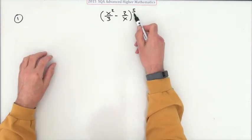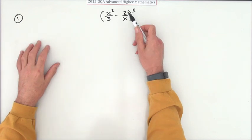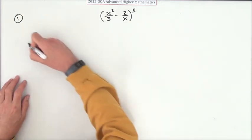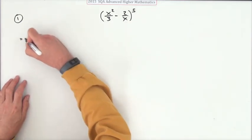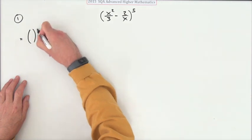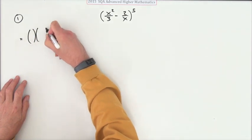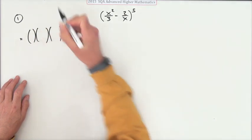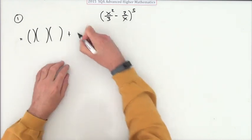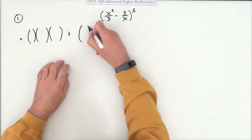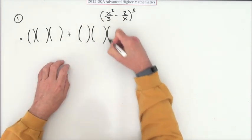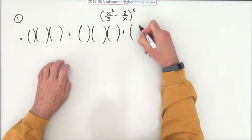Right, what have we got? There's power five, so there's going to be six terms, and all these terms are going to look exactly the same. I think I'll start way over there. There'll be the binomial coefficient, there'll be the first term, there'll be the second term with various powers. So I've got to put that down six times. It's like doing lines.